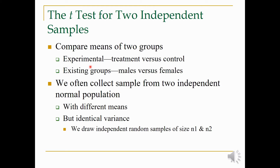We compare the mean of two groups — for example, experimental versus control, treatment versus control. These are two independent groups. Another example is taking existing groups like male and female — these are two independent groups. If you want to compare the mean age of males versus females, your null hypothesis would be that the mean age of both groups is the same. For this, you apply the independent t-test. We collect samples from two independent normal populations, and both groups should have different means but identical variance — that is, the variance of both groups should be the same.